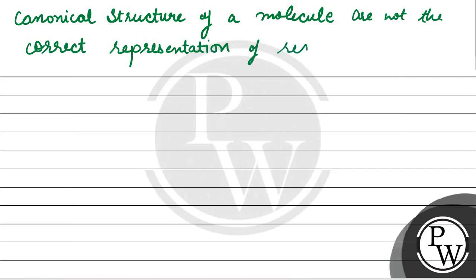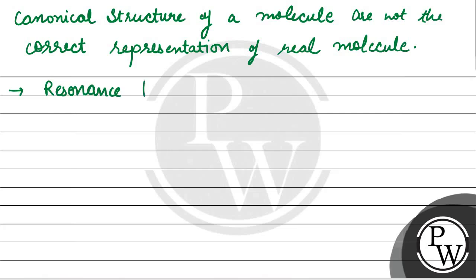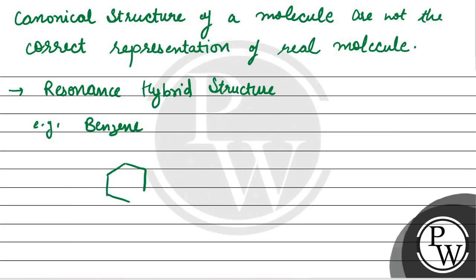Canonical structures are not the correct representation of the real molecule. The resonance hybrid structure has lower energy than any of the canonical structures. As an example, we can take benzene — I can also show the resonance structures here.